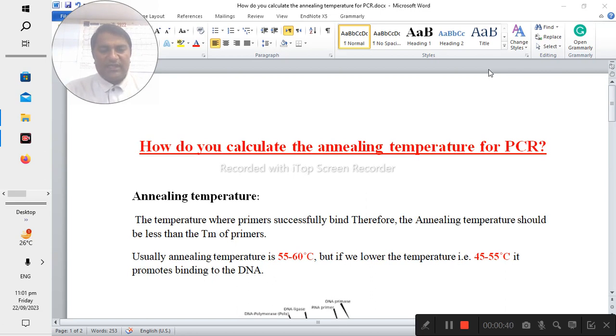The annealing temperature is the temperature where primers successfully bind. Therefore, the annealing temperature should be less than the Tm of the primers, where Tm means the melting temperature of the primer. Usually annealing temperature is 55 to 60 degrees, but if we lower the temperature to 45-55 degrees, it promotes binding to the DNA.